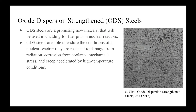The next generation of nuclear reactors require materials with improved radiation tolerance and improved high temperature strength. Oxide dispersion strengthened, abbreviated to ODS steels, are one class of material that may be able to meet these stringent requirements, having shown resistance to damage from radiation, corrosion from coolants, mechanical stress, and creep accelerated by high temperature conditions.